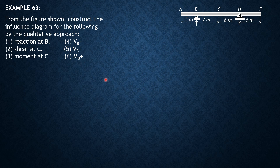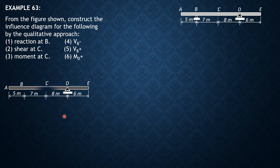For reaction at B, we remove the capacity of section B to resist vertical reaction. Imagine a ruler attached to the solid beam segment at B, guided with a smooth slot as shown. This portion remains solid, and we have only a ruler on this slot. Then we push point B upward. This beam will rotate about D, and the resulting shape or diagram would be the influence line for reaction at B.